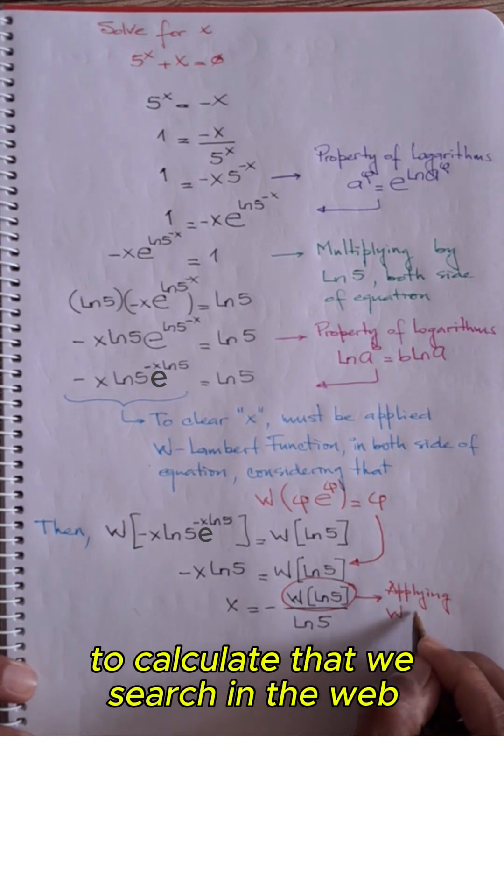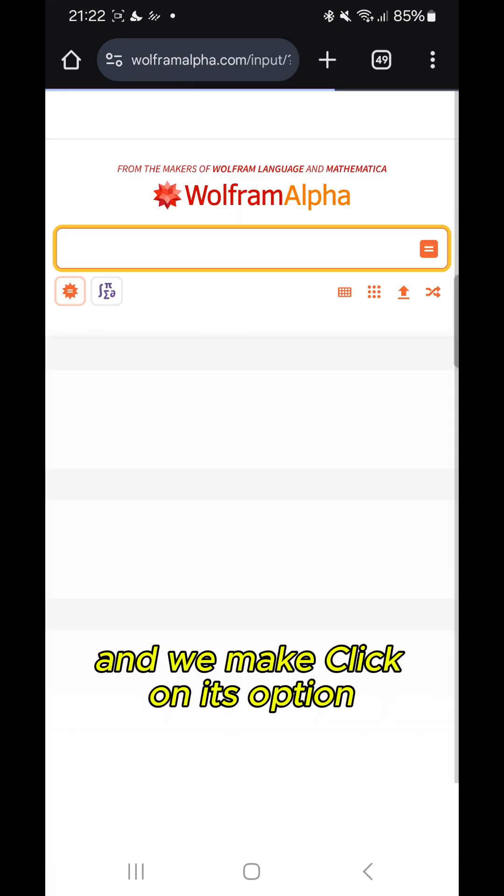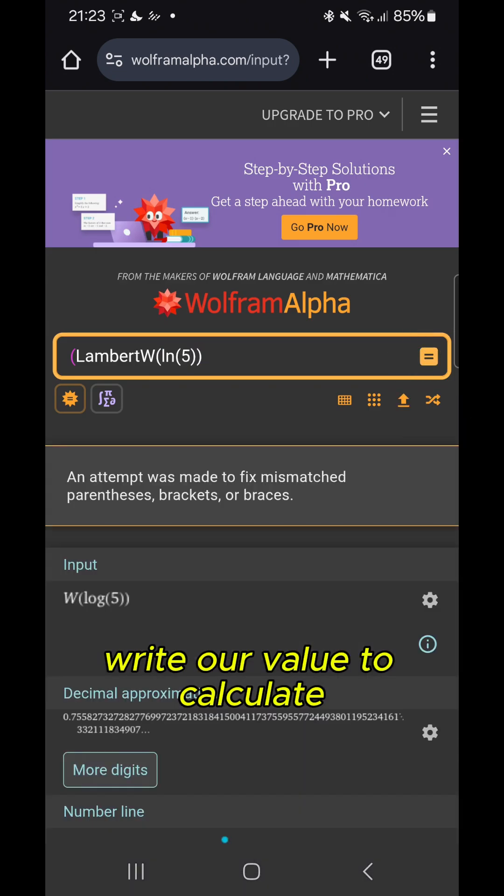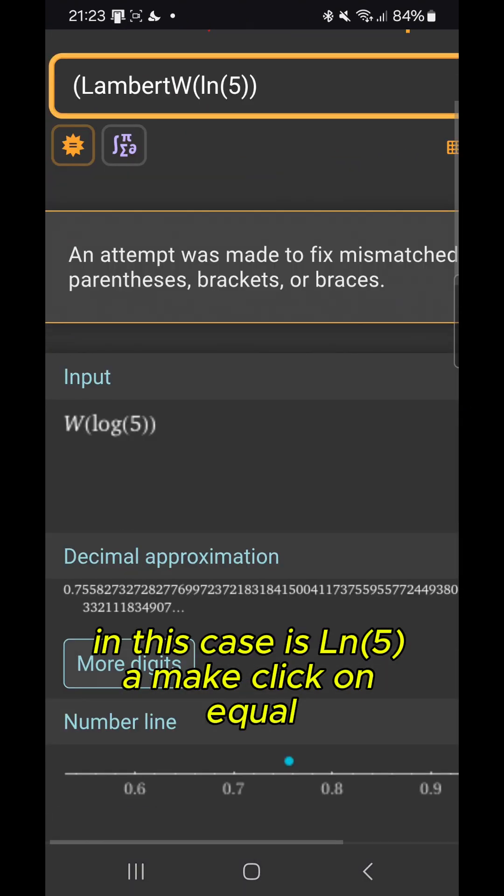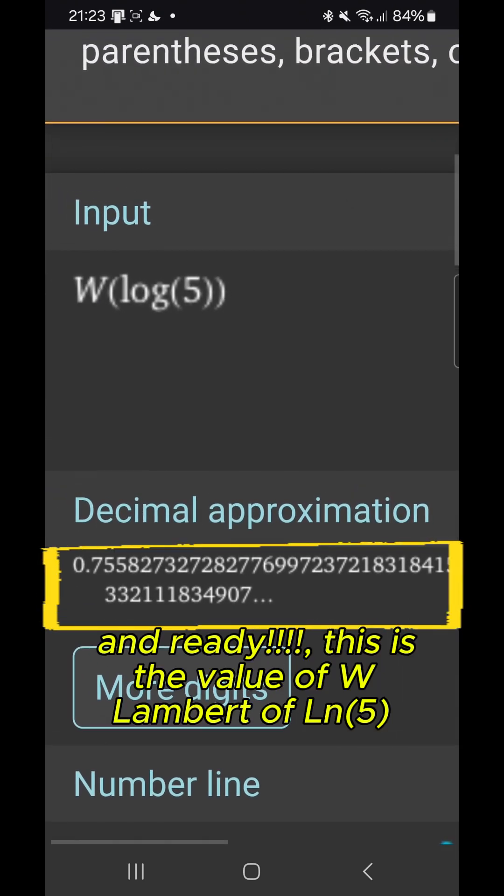To calculate that, we search the web for a W Lambert function calculator and click on the first option. We write our value to calculate, in this case neperian of 5, click on equal, and this gives us the value of W Lambert of neperian of 5.